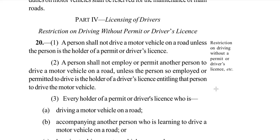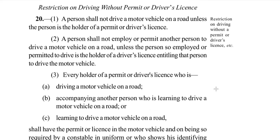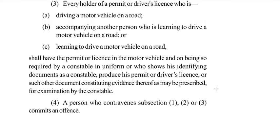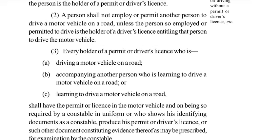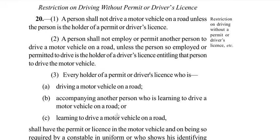Section 20 of the Road Traffic Act, subsection 4 states: a person who contravenes subsection 1, 2, or 3 commits an offense. Looking at subsection 1: a person shall not drive a motor vehicle on a road unless the person is the holder of a permit or driver's license.